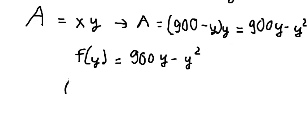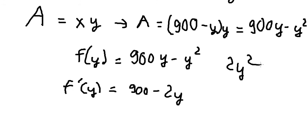The next thing we need to do, we need to do first derivative f of y, and this one we have 900 minus 2y. This one we have number 1, this one we have 2y to the power of 2 minus 1, and that's we have 2y in here.